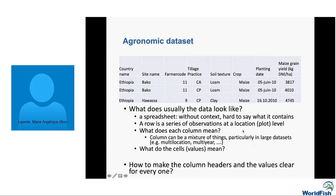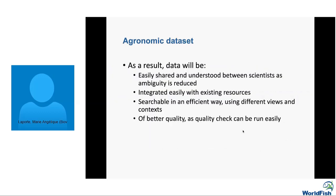One downside is that the table with identifiers is more machine-readable than human-readable, but there are tools that can convert those identifier-based tables back to human-readable values. As a result of this exercise — going from the plain spreadsheet to one with ontology identifiers — the results can be easily shared and understood between scientists, ambiguity is reduced, the dataset can be integrated with existing resources, and it becomes searchable efficiently. Having the ontology helps reduce semantic heterogeneity because each term is well defined and all synonyms point to the same concept.